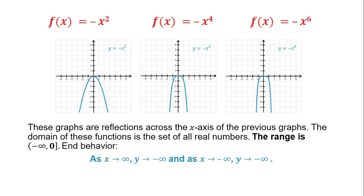The reflections — y equals negative x squared, y equals negative x to the 4, y equals negative x to the 6 — are reflections across the x-axis of the previous graphs. The domain is all real numbers and the range is from negative infinity to 0. On each end of the graph, the graphs go down. In arrow notation: as x goes to infinity, y goes to negative infinity; and as x goes to negative infinity, y also goes to negative infinity.